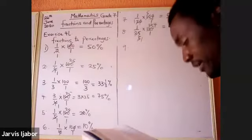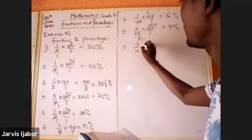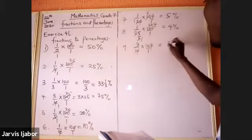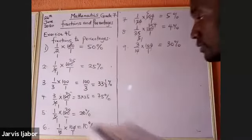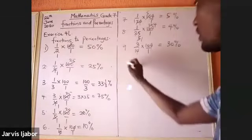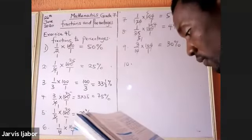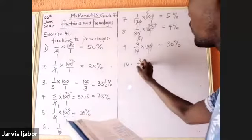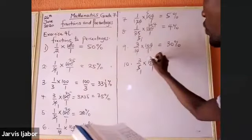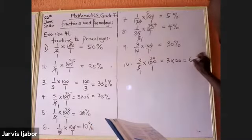Number nine: 3 over 10 times 100 over 1 — that gives 30 percent, since 3 times 10 equals 30. Number ten: 3 over 5 times 100 over 1 — 5 goes into 100 twenty times, 3 times 20 gives 60 percent.